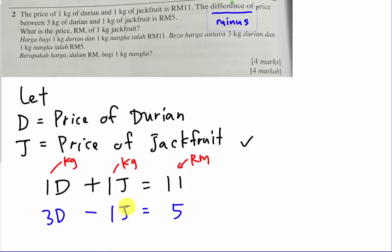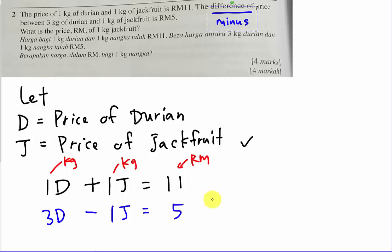Some students might ask: why can't I use 1J minus 3D? It doesn't make sense, because obviously the price of durian is higher and jackfruit is smaller. You could argue that maybe jackfruit is RM10 and durian is RM1, but if you think like that — 10 minus 3 — you will not get 5. That's why I use 3 kg of durian minus 1 kg of jackfruit. I'll just use simultaneous equation to solve it; it's easier.